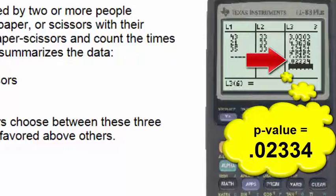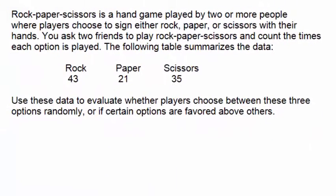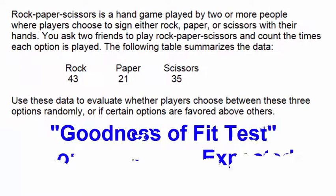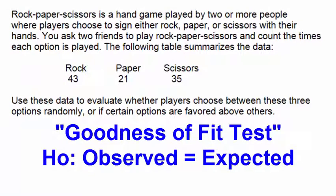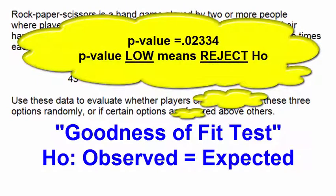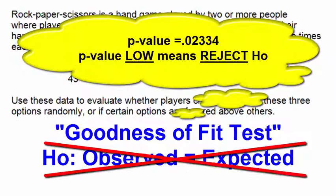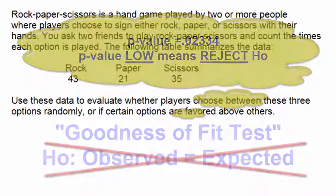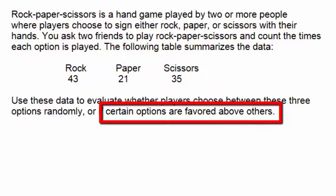This is a low p-value and if the p-value is low we reject the null hypothesis. The null hypothesis is that the observed data follows the uniform distribution. However we reject that null hypothesis, which means that certain options are favored above others.